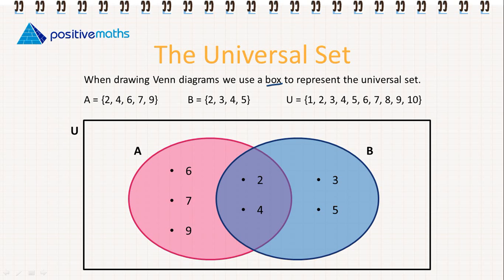So we have to include a box, not a circle, for the universal set. And then in this box, we're going to put in the elements that are in the universal set but that are not contained in A or B: the elements 1, 8, and 10.